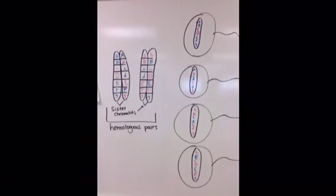After meiosis I, each of those homologous pairs will be separated. And then after meiosis II, the sister chromatids will become separated.